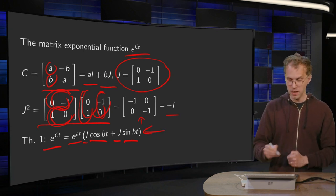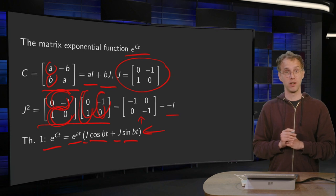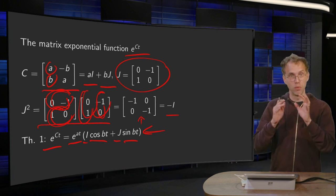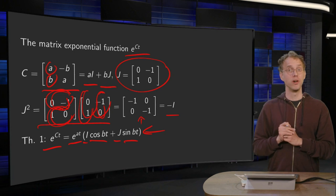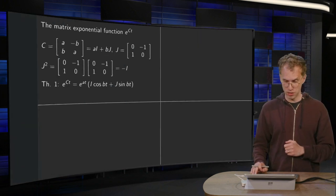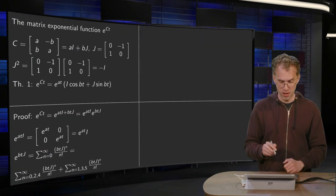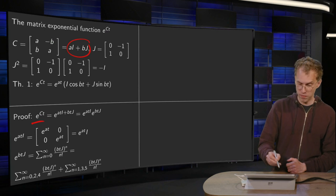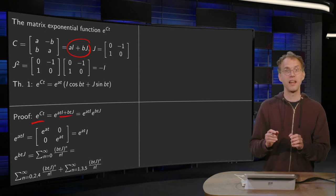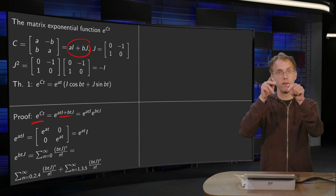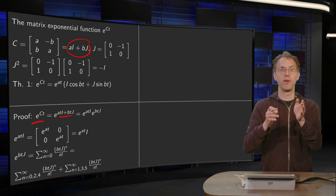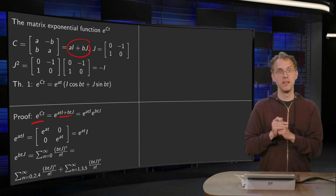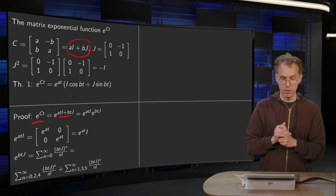So why does this formula over here hold? Let's do a small proof. First of all, e to the power ct - you use this combination over here, plug it in, and then we have that e to the power a plus b equals e to the power a times e to the power b if the matrices a and b commute, and that's the case over here. So we have this product of two matrix exponentials.